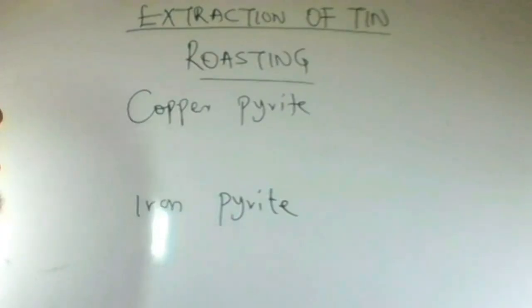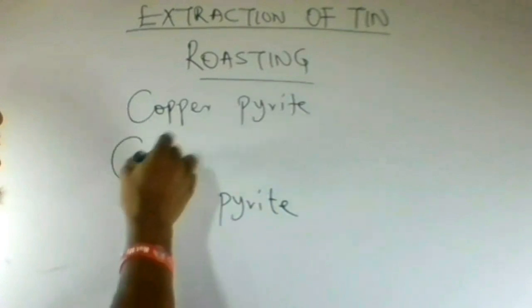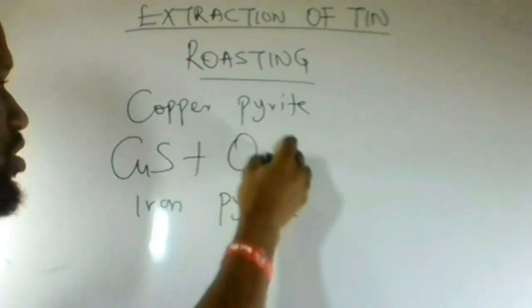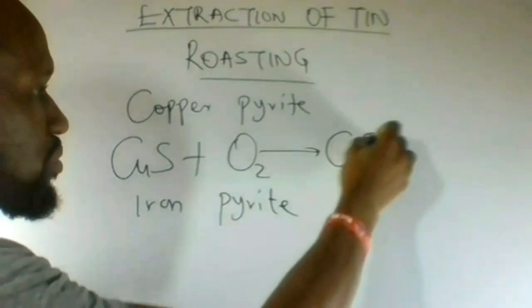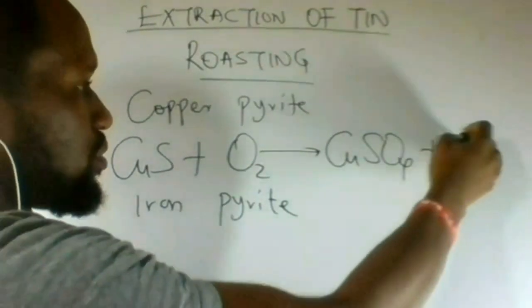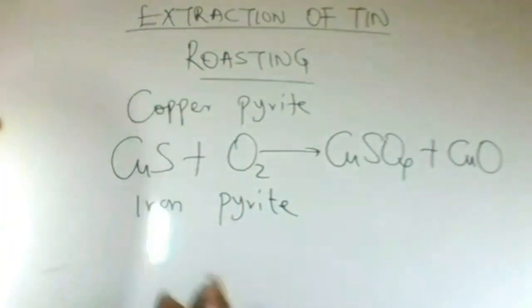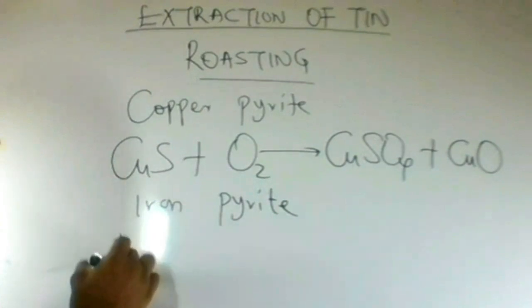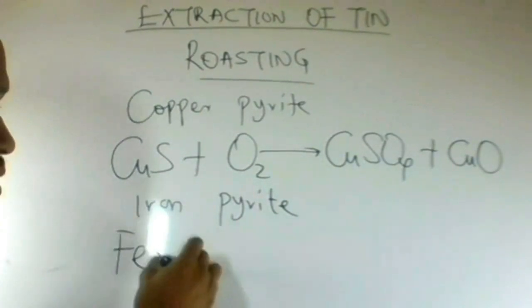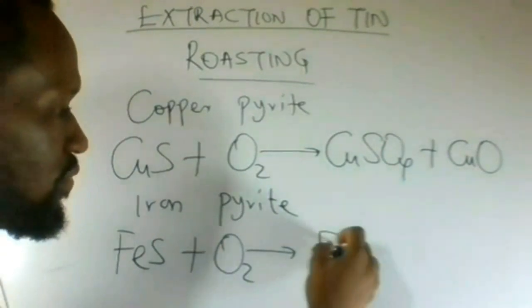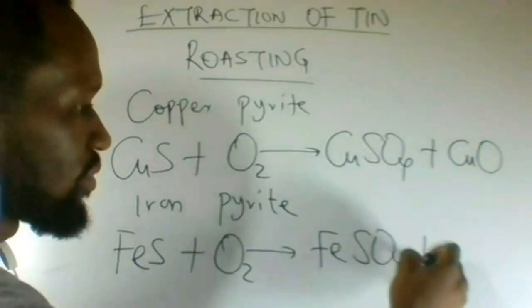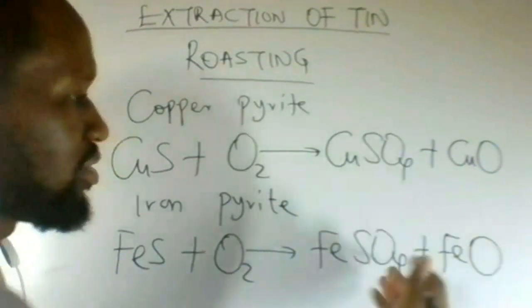Copper pyrite, when roasted in oxygen, forms copper sulfate and copper oxide. Also, iron pyrite roasted in oxygen forms iron sulfate and iron oxide.